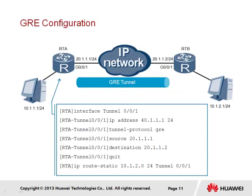To implement GRE, we are required to first establish tunnel interfaces — logical interfaces assigned with an IP address that will function as the external IP address for the GRE payload over the tunnel. The IP address for the local tunnel interface is configured as 40.1.1.1/24. GRE is then set as the protocol to be supported over the tunnel interface. A source and destination point for the tunnel is then configured — in this case using the address for interface GigabitEthernet 0/0/1 on RTA as the source, and the equivalent address on RTB as the destination. A static route is created to inform RTA that packets destined for network 10.1.2.0 should be carried over the tunnel interface.